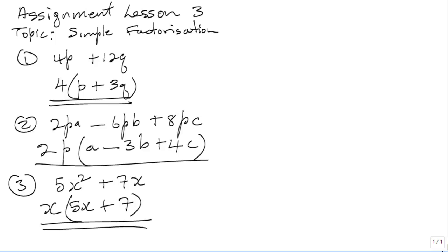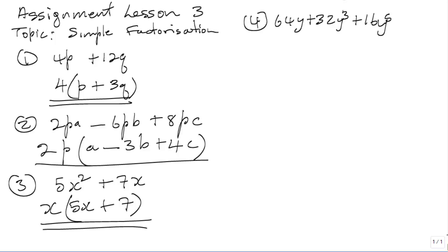Number 4 is 64Y plus 32Y cubed plus 16Y to the 5th. Looking on the three terms — first, look on the numbers: we have 64, 32, and 16, so 16 is common. Then we look on the letters: we have Y, Y to the 3rd, and Y to the 5th, so Y is common. Y can go into all the terms.